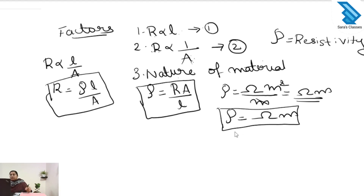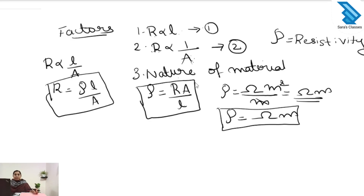Next we have to find the factors affecting the resistivity of the conductor. The important thing to note is that resistivity does not depend on the area of cross section or length of the conductor. It depends only on the nature of the substance.